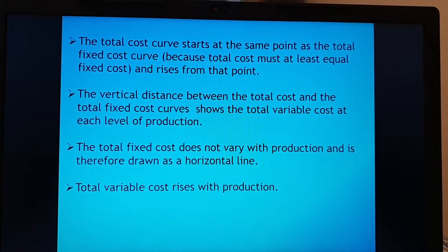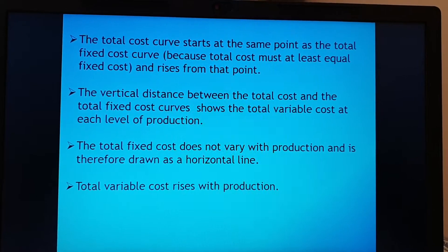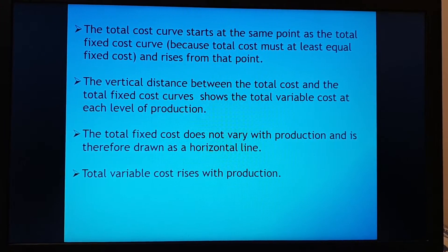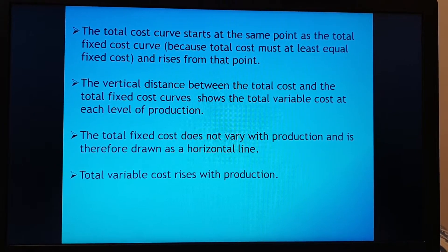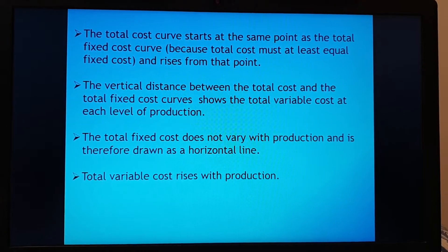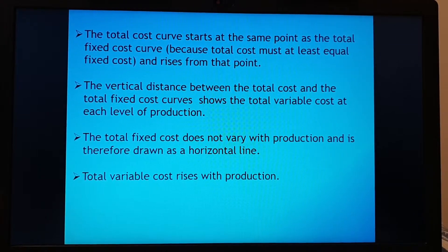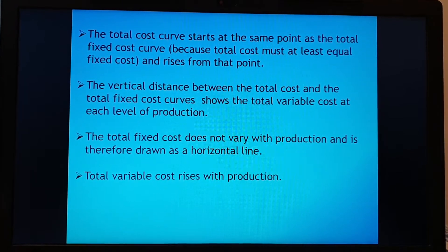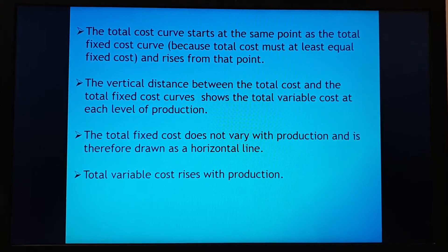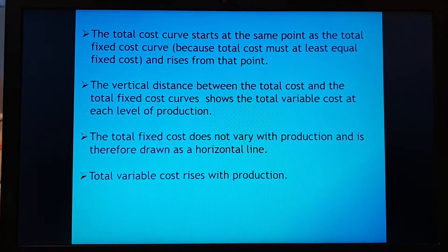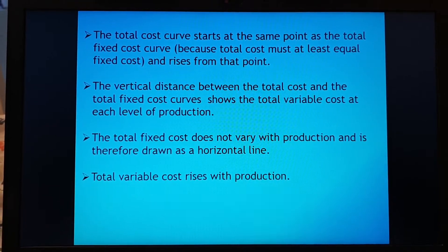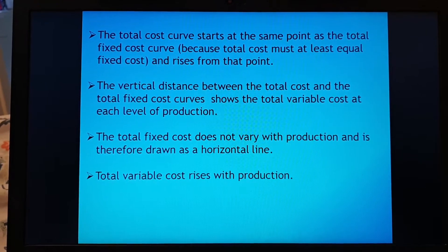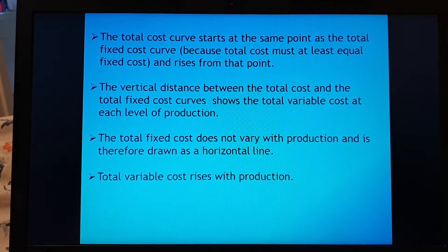The variable curve would have went upwards and the total cost curve also went upwards as output increases. Now they say the total cost curve starts at the same point as the total fixed cost curve because total cost must at least be equal to fixed cost and then you start rising from that point. So take that in mind if you have to draw that curve. I will give you an activity later on where I'm gonna give you a table with information and from the information you have to draw a graph like this.